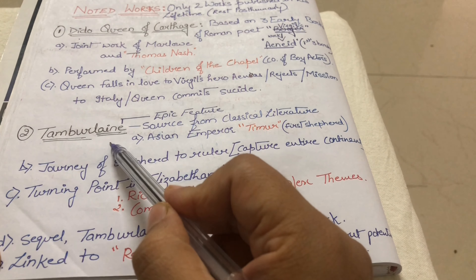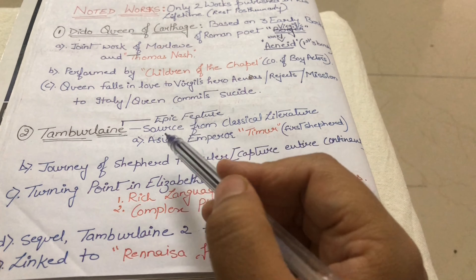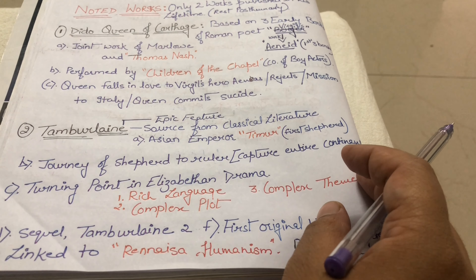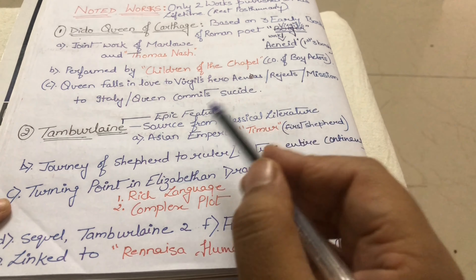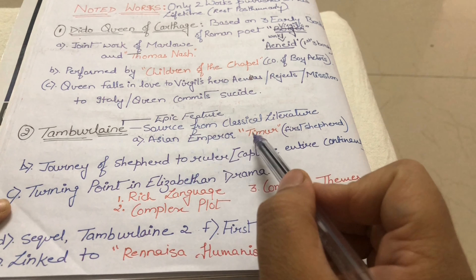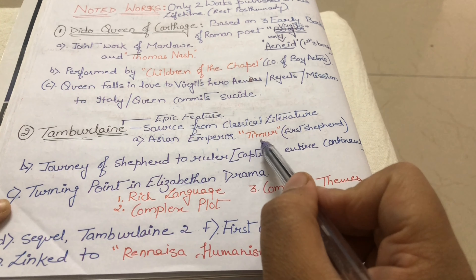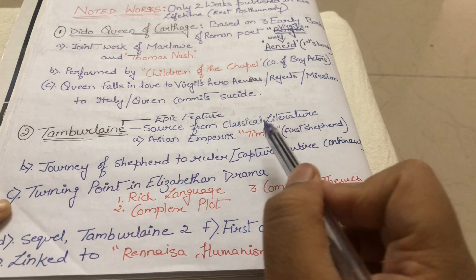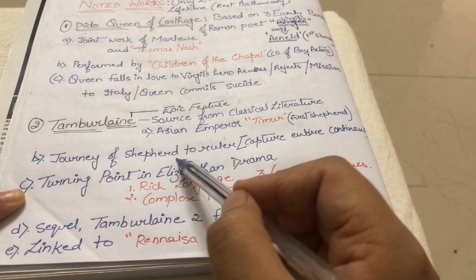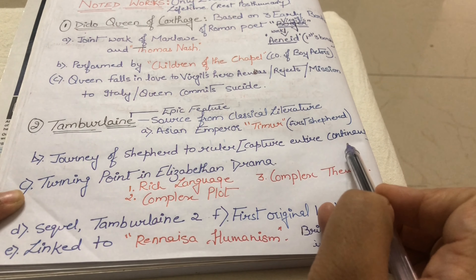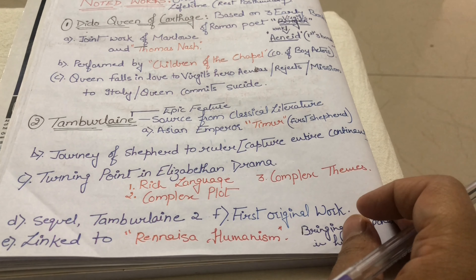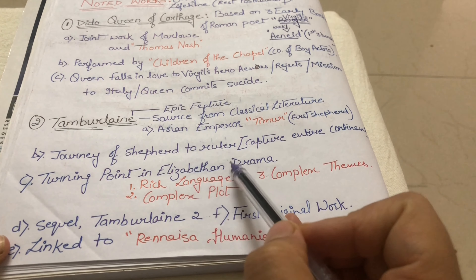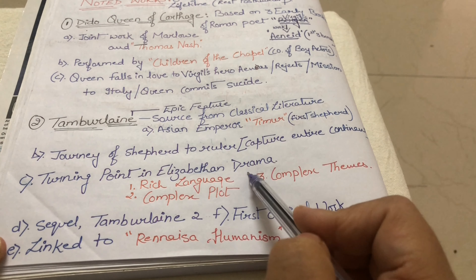The next work is Tamburlaine, which has an epic feature. Its source is inspired from classical literature. The story is of an Asian emperor named Timur — a shepherd who became an emperor. It is the journey from shepherd to ruler, capturing an entire continent. This play was a turning point in Elizabethan drama because of its rich language, complex plot, and complex themes.